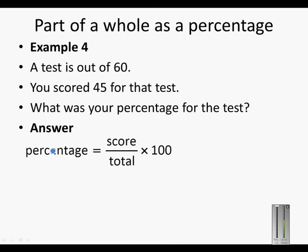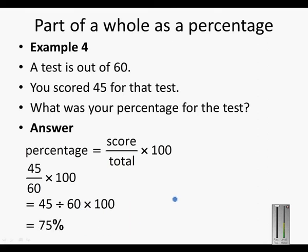To calculate the percentage as a part of a whole, we take our score and divide by the total the paper was out of, times by 100. So 45 was the amount that we got for the paper, we divide by 60 and times it by 100. 45 divided by 60 times 100 gives us 75% for the total. When we have to calculate score, we take the score divided by the total times by 100.